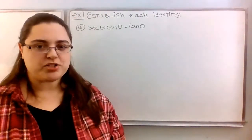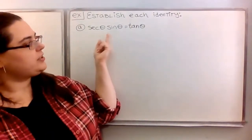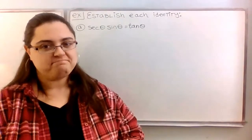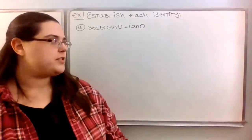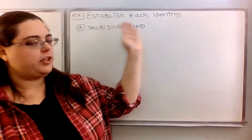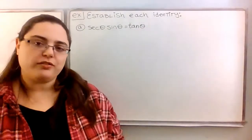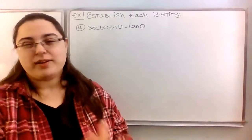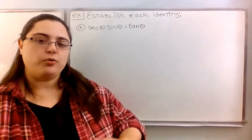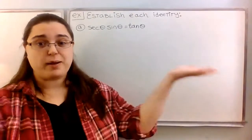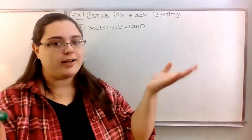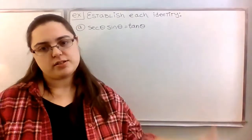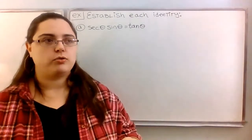For our first expression we're going to establish that secant of theta times sine theta equals tan theta. You want to avoid treating this equation like an equation — you don't want to manipulate it by moving one thing to the other side. The reason we want to avoid doing that is because when you do that you assume the equation is true at the beginning, and we can't. We're trying to establish that this is true, so we can't use the assumption that it's balanced.